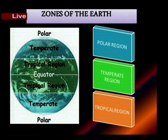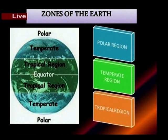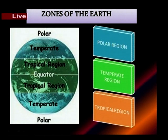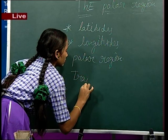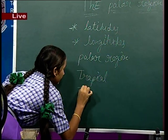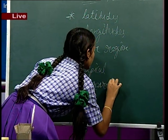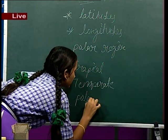Now I am showing the earth. How many temperature zones are on the earth? The temperature zones are 3, divided on the basis of temperature. There are three temperature zones: tropical zone, temperate zone, and polar zone.